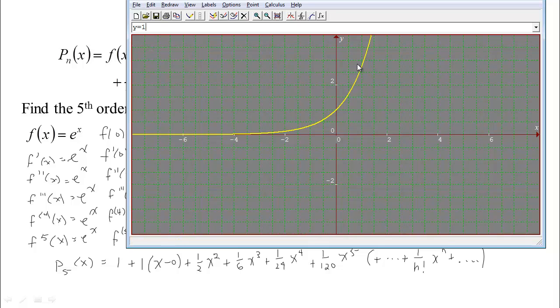Let's see. So first Taylor polynomial would be 1 plus 1 times x, right? That's p1.